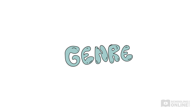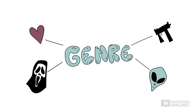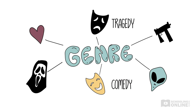Genre is a general category of literature, like science fiction, horror, action, or romance. Romeo and Juliet is a tragedy, but with a healthy dose of Elizabethan comedy along the way.